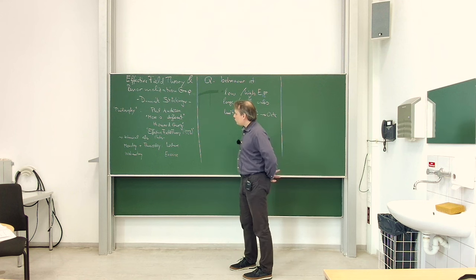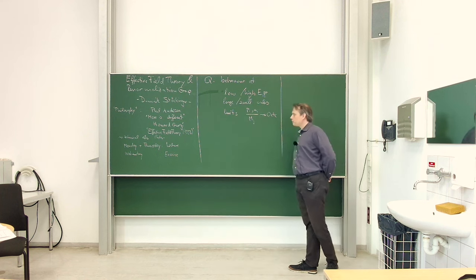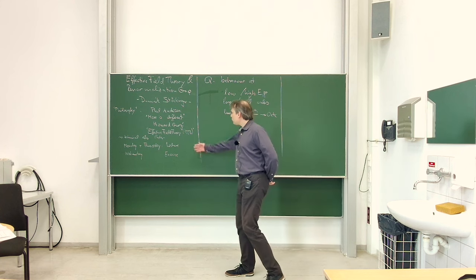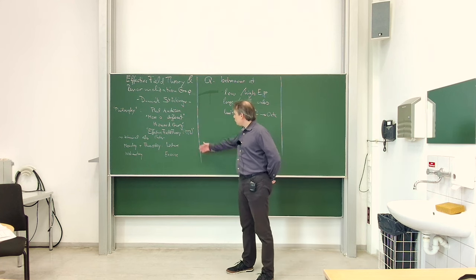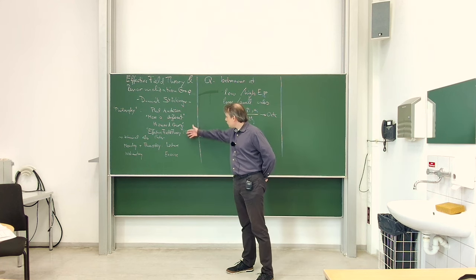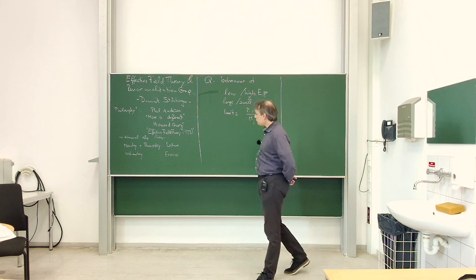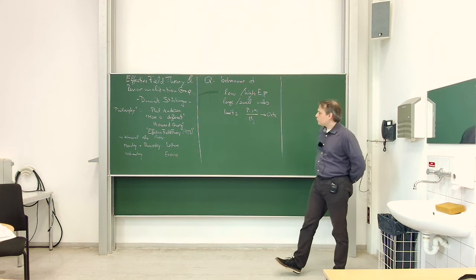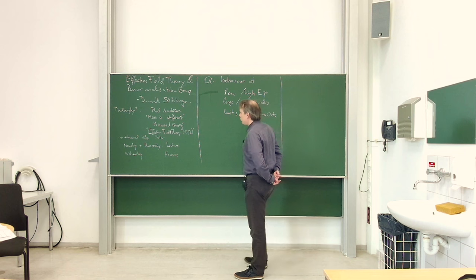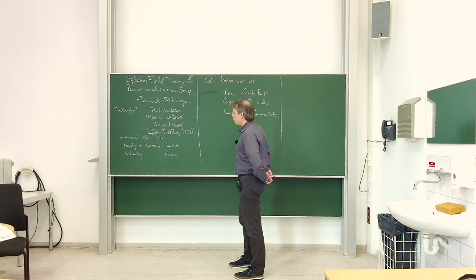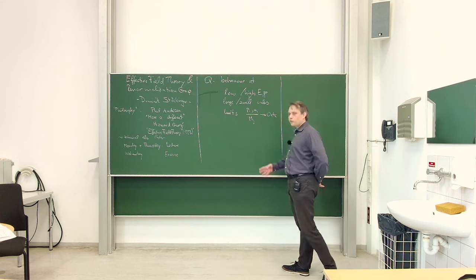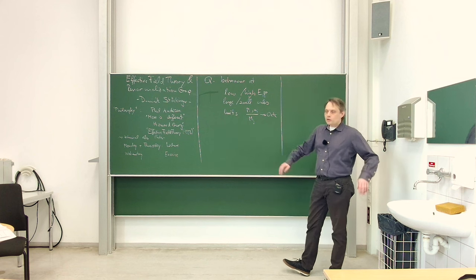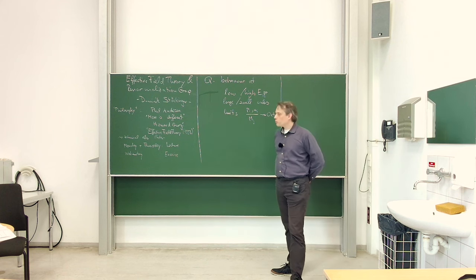Similarly, there is a paper by Howard Georgi, also one of the pioneers of Effective Field Theory, which is actually called 'Effective Field Theory.' If you Google for it, you should specify the date 1993 — it is a review on the way to think about Effective Field Theory. It's also a very non-technical paper. Technical references we will discuss as we go along.